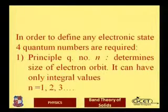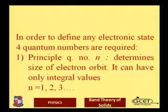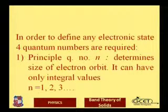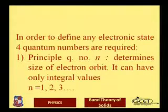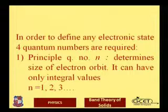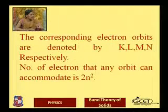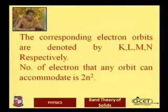The first quantum number is the principal quantum number n. It determines the size of the electron orbit. It can have only integral values: n = 1, 2, 3, and so on up to infinity. In Rydberg atoms, there are existing n = 100 or 200 values and corresponding energies are also there.